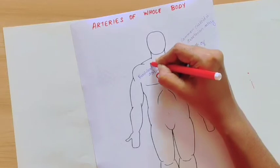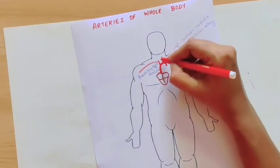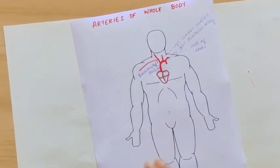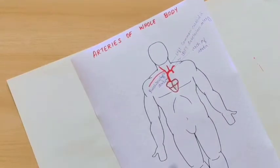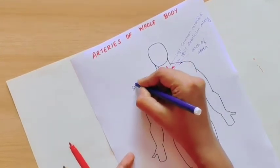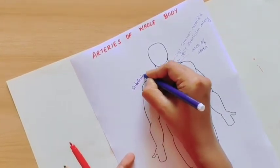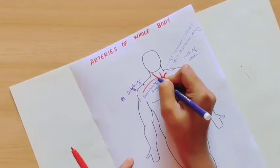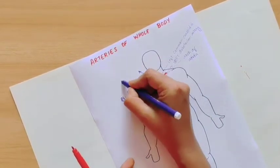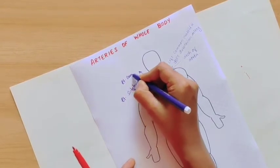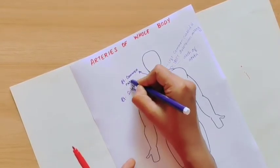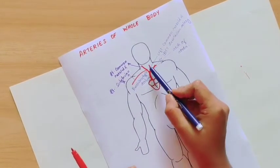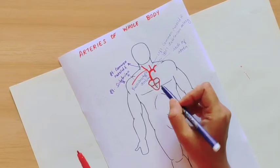From the brachiocephalic artery, one branch is the right subclavian artery, and another is the right common carotid artery. On the right side of the arch, this is the subclavian artery and this is the right common carotid artery. So we have both left and right common carotid arteries.